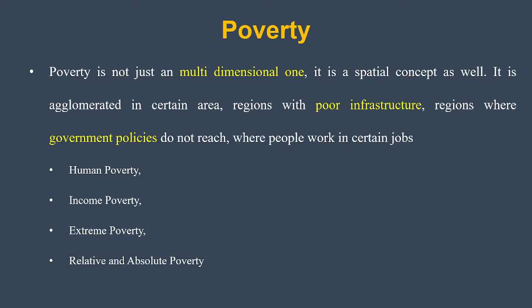In certain areas or regions where infrastructure is poor, government policies could not reach properly, or people have jobs with low income — those are the spatial patterns agglomerated with poverty. There are different types: human poverty, income poverty, extreme poverty, relative and absolute poverty. Human poverty refers to the lack of essential human capabilities such as literacy level or nutrition level of household members.